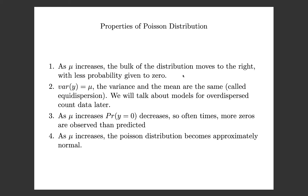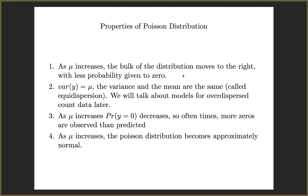As mu increases, it moves the distribution to the right with less probability given to zero. The variance of Y equals mu — a property called equidispersion, where the variance and mean are the same. We'll talk about a different model later that deals with overdispersion. As mu increases, the probability that Y equals zero decreases, but in political science count data we tend to have lots of zeros — more than we'd expect under the Poisson. And as mu increases, the Poisson becomes approximately normal.